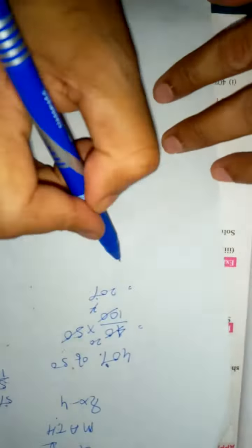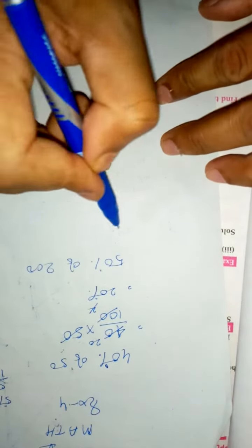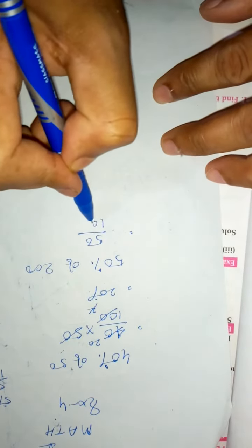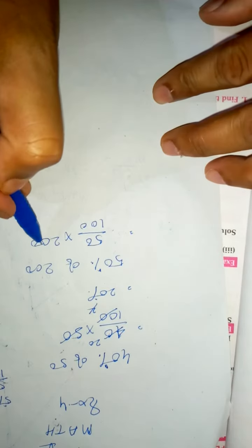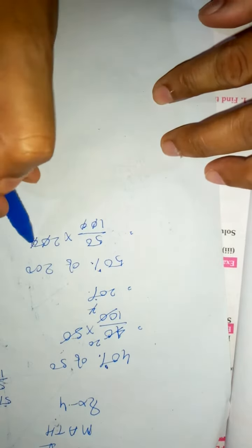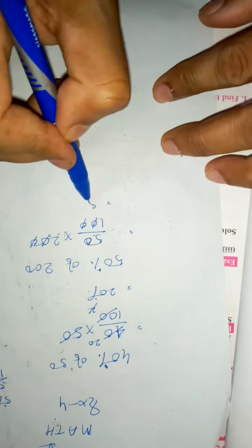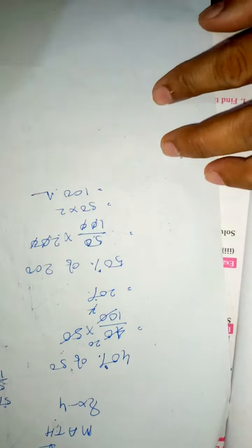The next problem is to find 50% of 200. Write 50 over 100, then multiply by 200. You can cancel 100 and 200 by dividing by 100. Then 50 times 2 equals 100. That's your answer.